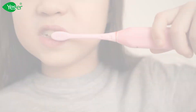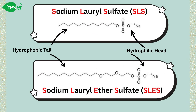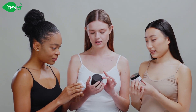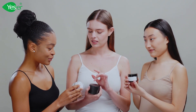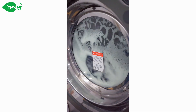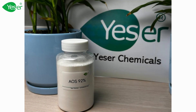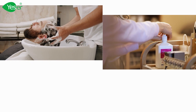Next is sodium laureth sulfate, or SLES — a milder version of SLS often found in personal care products. Next is linear alkylbenzene sulfonate, or LAS, which is widely used in laundry detergents and household cleaners. Next is alpha olefin sulfonate, or AOS, used in shampoos, body washes, and dishwashing liquids for its good foaming properties and mildness.